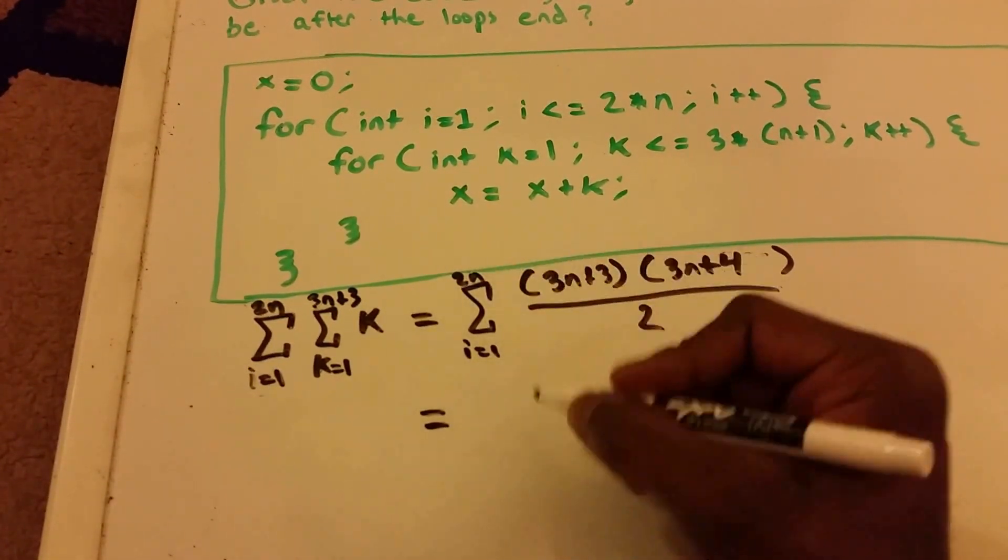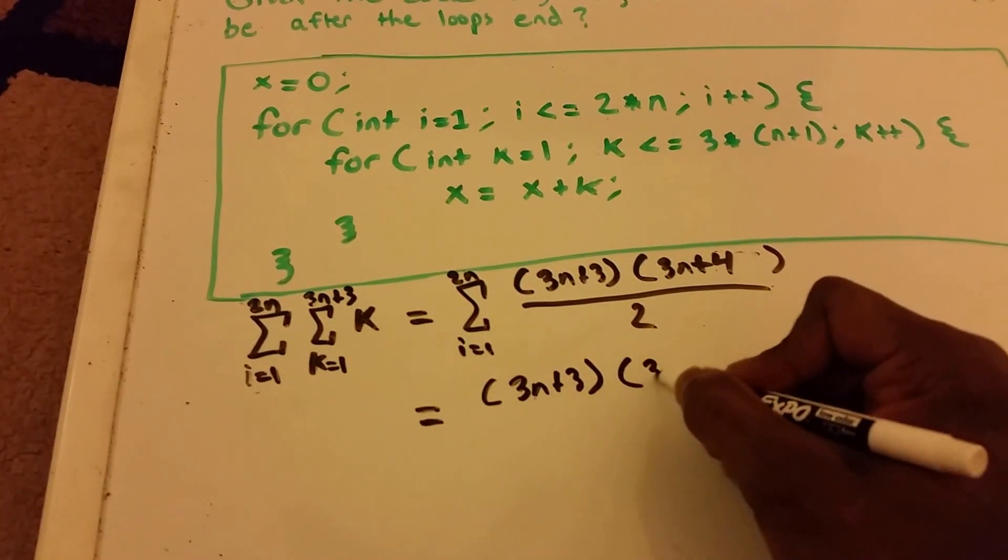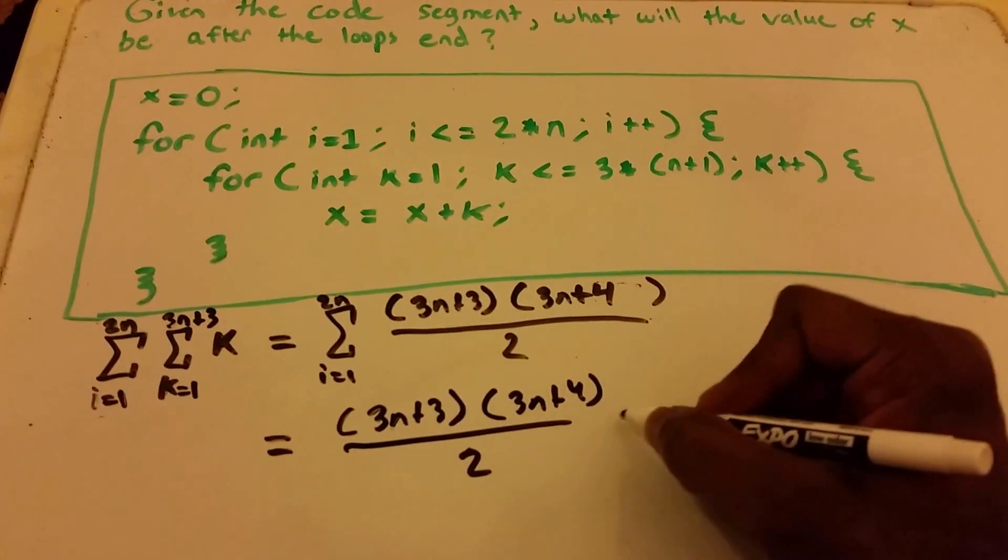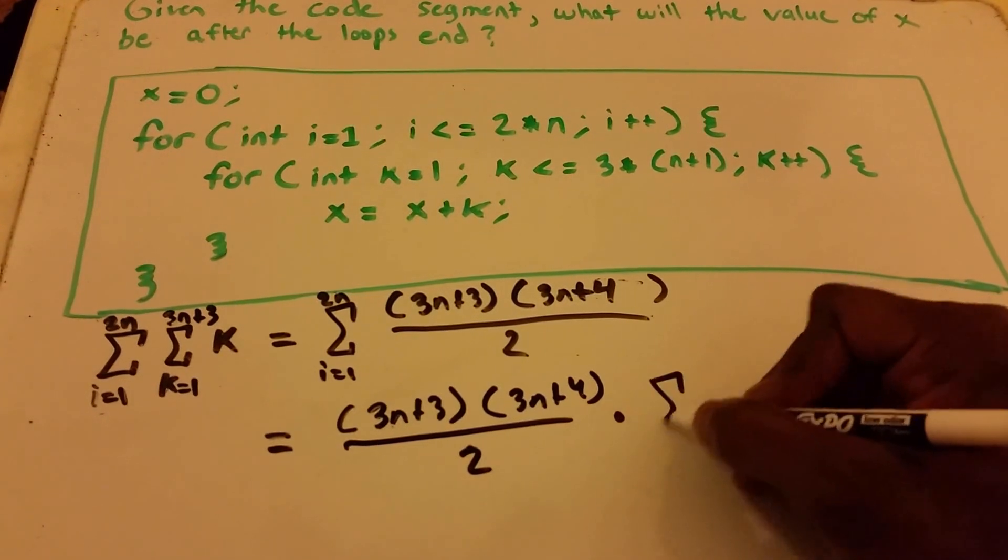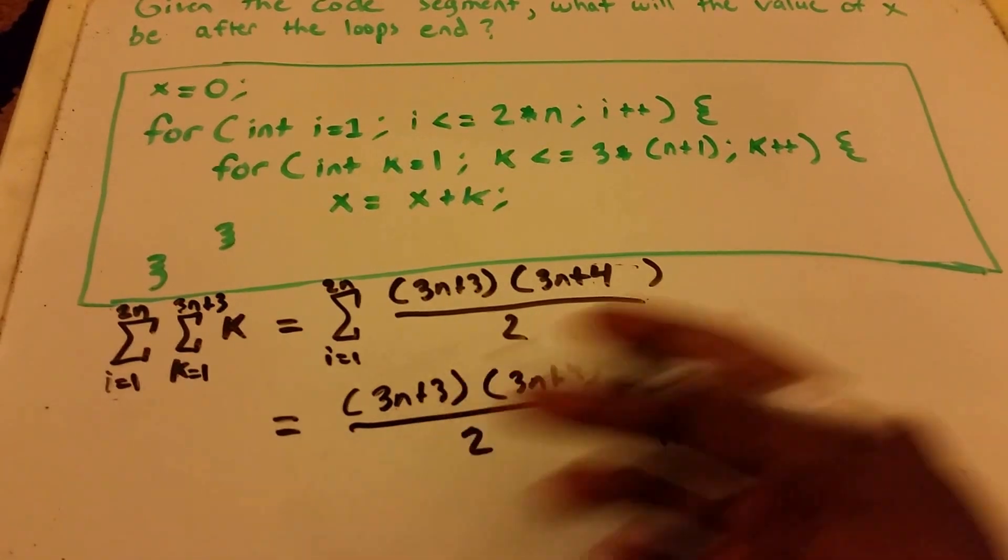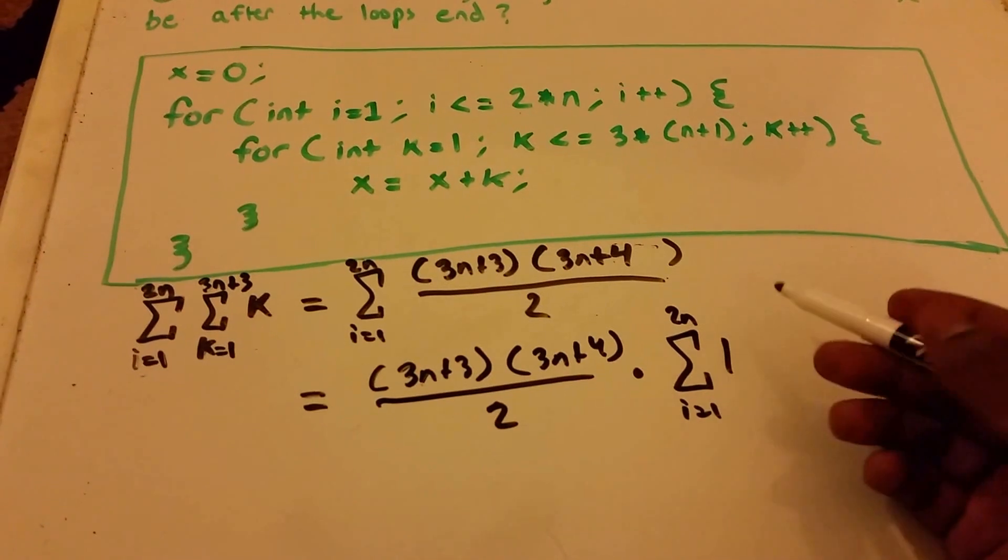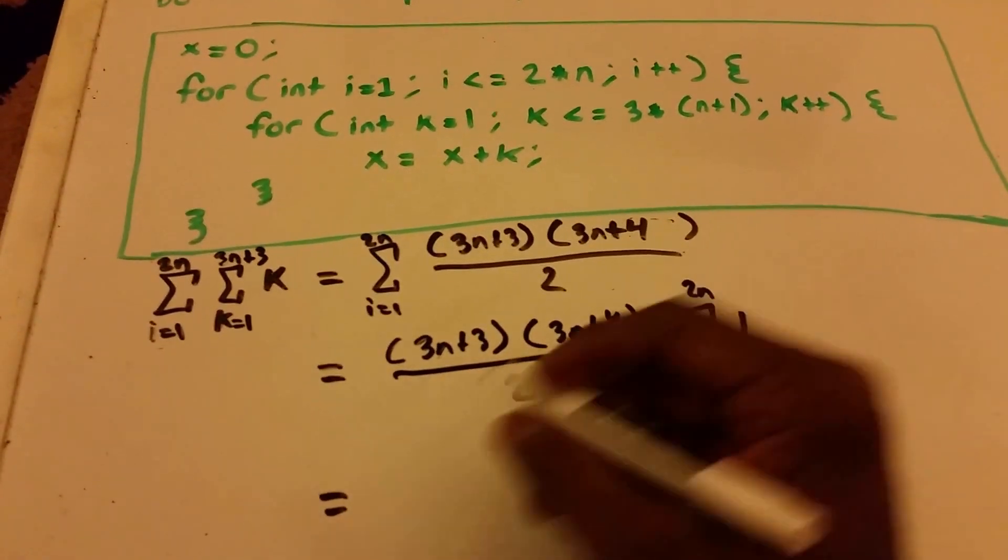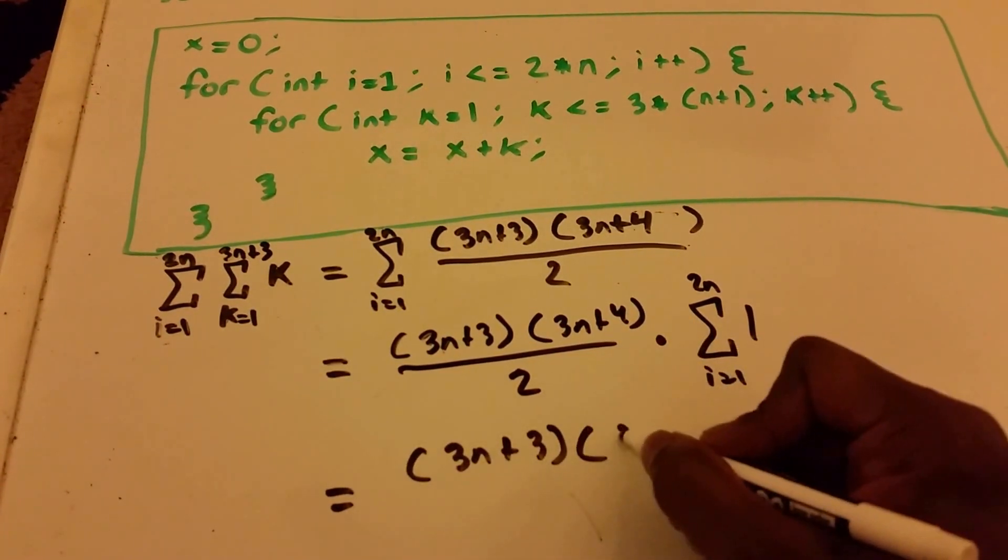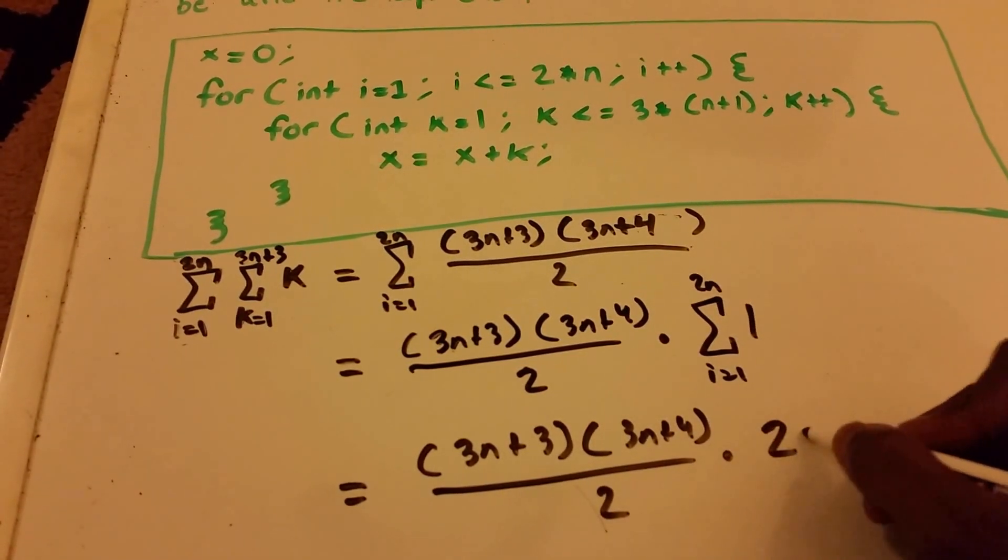So let's rewrite this problem again: three n plus three times three n plus four over two. What we're doing, we're just moving it out. This is one of the properties of summations. And I'm rewriting it now just like that, and now we can solve this also using another formula. That's just going to be equal to two n. So now we're going to rewrite this: three n plus three times three n plus four all over two times two times n.